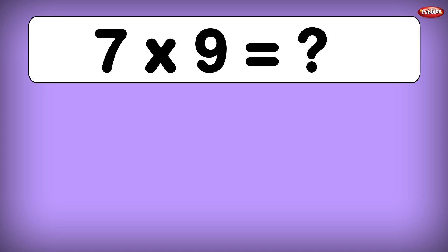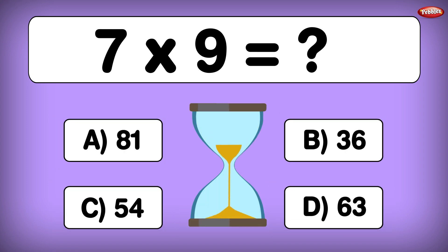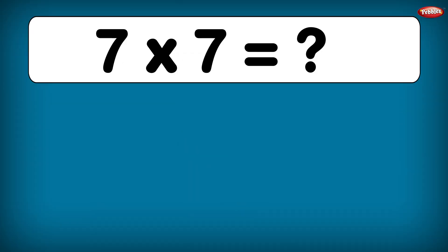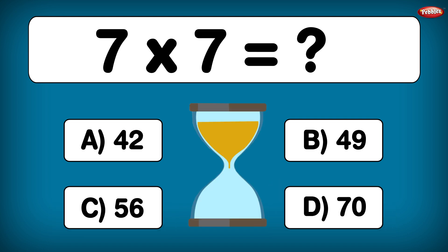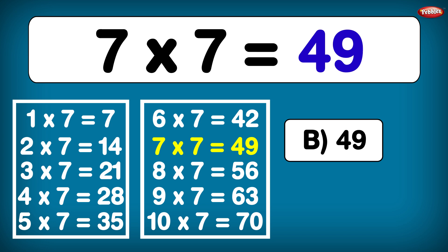7 times 9 is equal to... 7 times 9 is 63. 7 times 7 is equal to... 7 times 7 is 49.